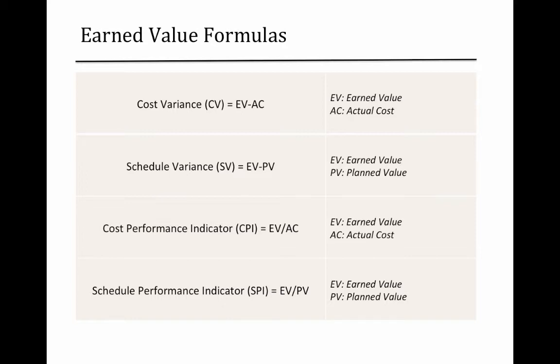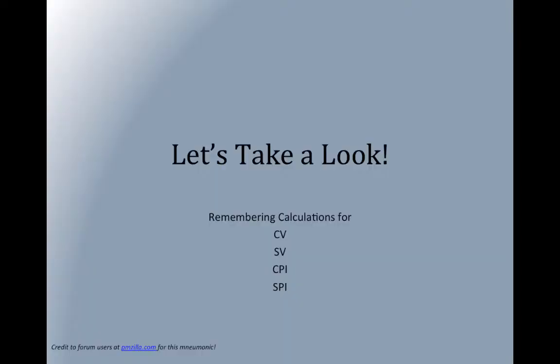So if you know your earned value, actual cost, and planned value, you can calculate any of those four measures. This is all well and good, but how can you remember how these all relate to one another?